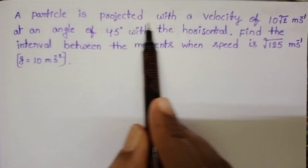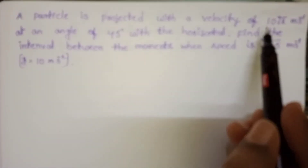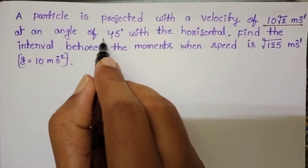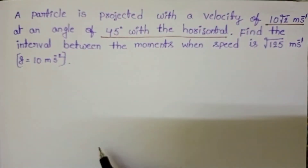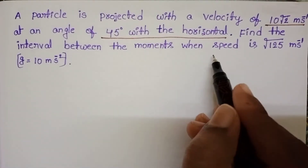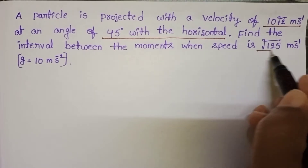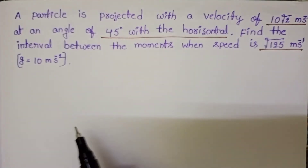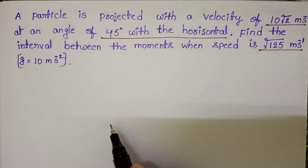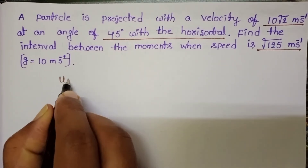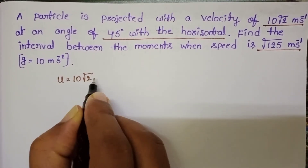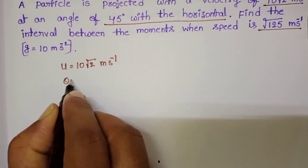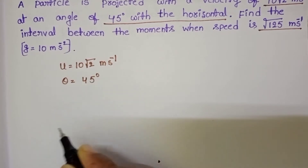A particle is projected with a velocity of 10√2 meter per second at an angle of 45 degrees with the horizontal. Find the interval between the moments when speed is √125 meter per second. In the given question, the initial velocity u is 10√2 meter per second, and the angle with the horizontal theta is 45 degrees.